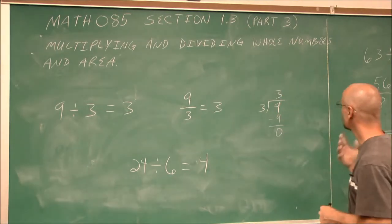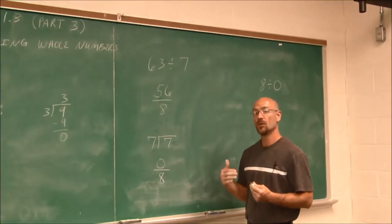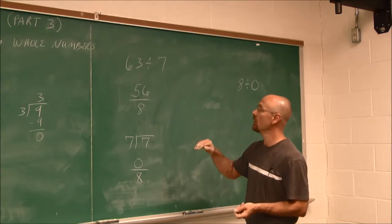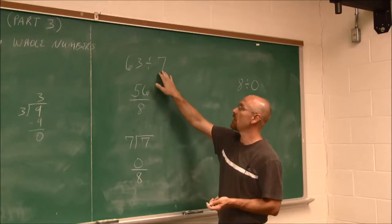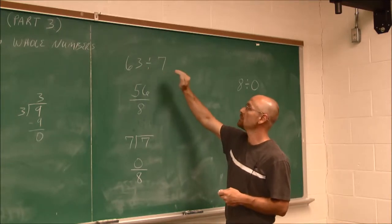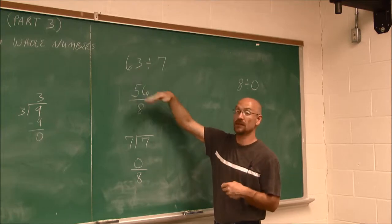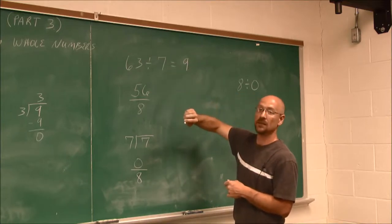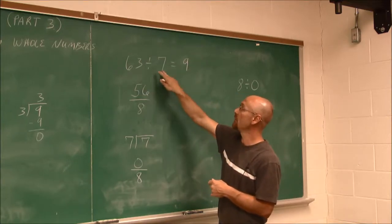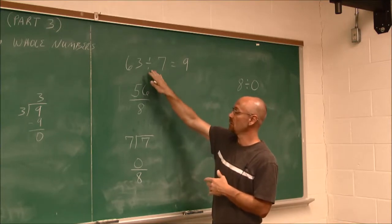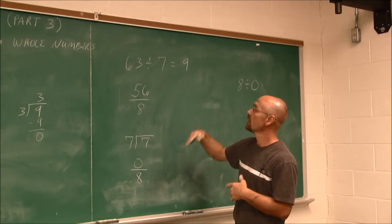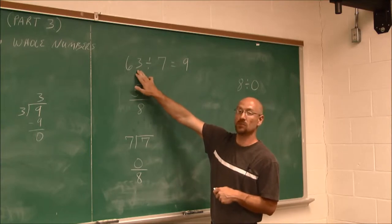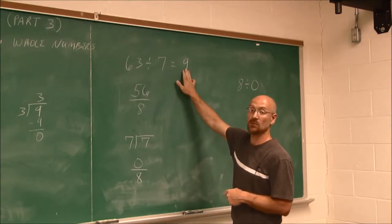Let's look at some examples. We use multiplication to check our work, so we can actually use that to do division as well. If I have 63 divided by 7, I can ask myself: what times 7 is 63? It's the opposite operation. Well, I know that 9 times 7 is 63. So 63 divided by 7 is 9. That's essentially what we do with division — the opposite of multiplication. 7 can be subtracted from 63 nine times, because 9 times 7 is 63.